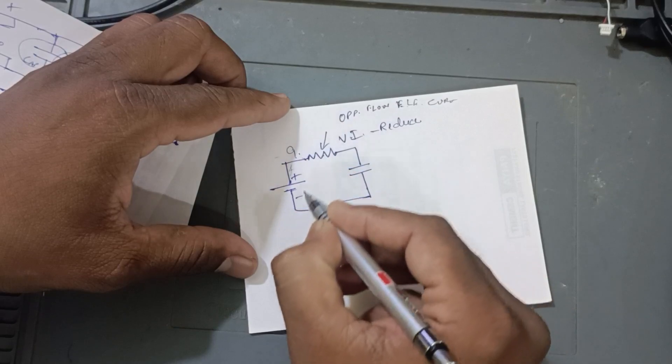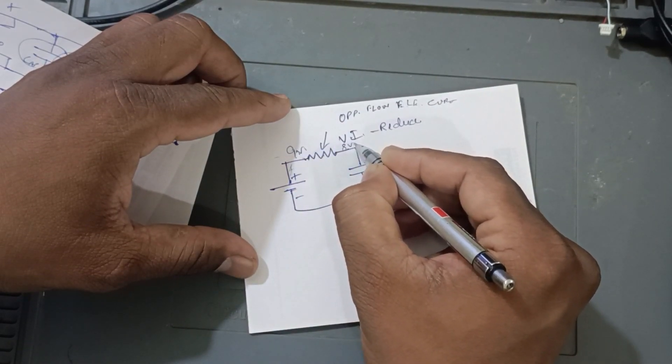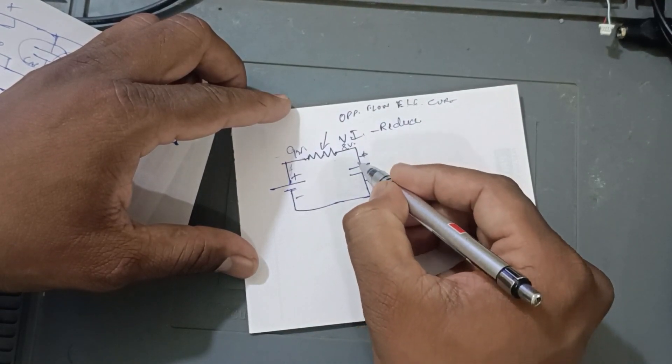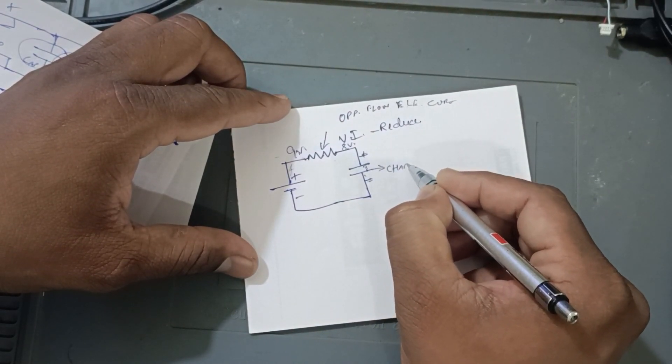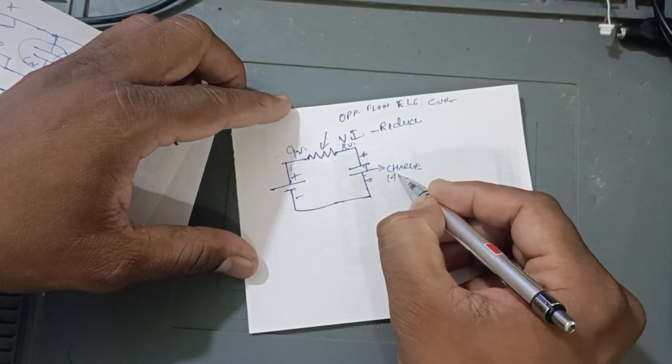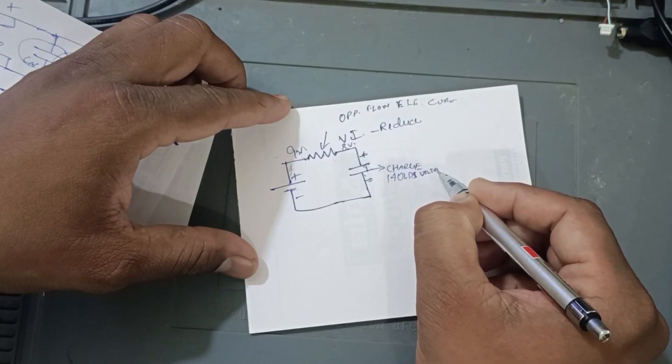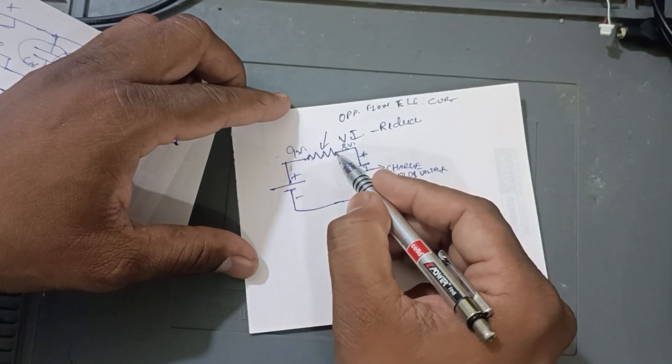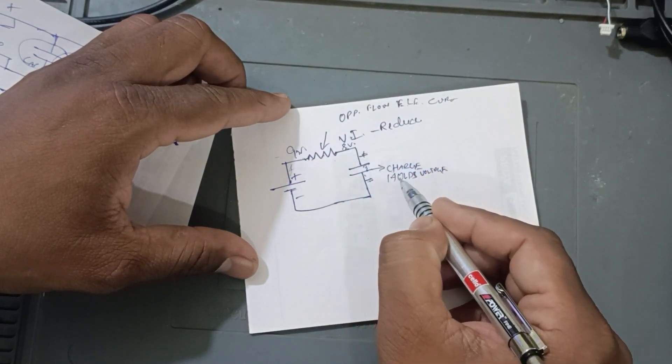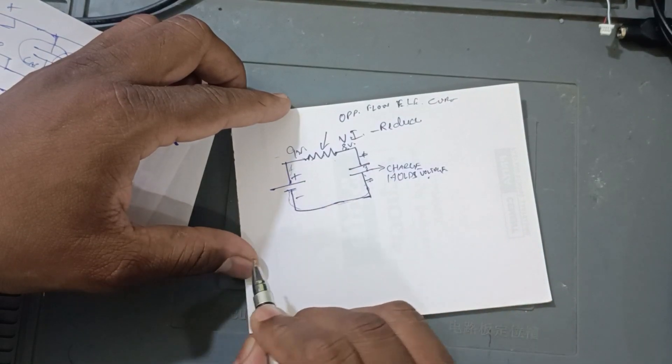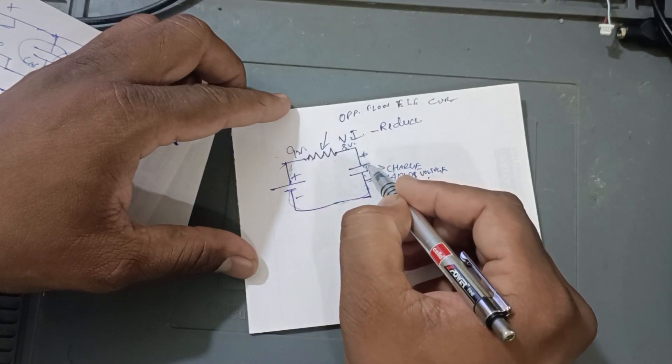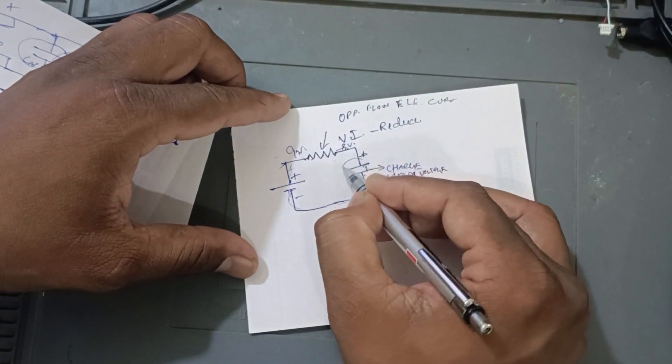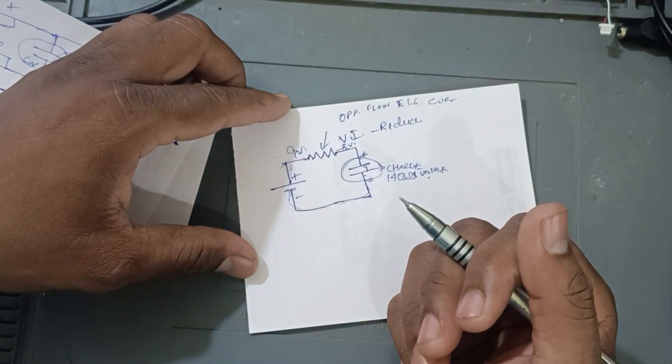See, here, for example, here, 9 volts will come and here, maybe 8 volts, it will reduce. But here, across this point, positive and negative point, capacitor will charge. Charge. And holds the voltage. Okay. Here, once again, I will tell you, across this resistor, current and voltage will get dropped. But here, this point, voltage and current won't be there. It will get reduced. But the capacitor holds the voltage. Okay.